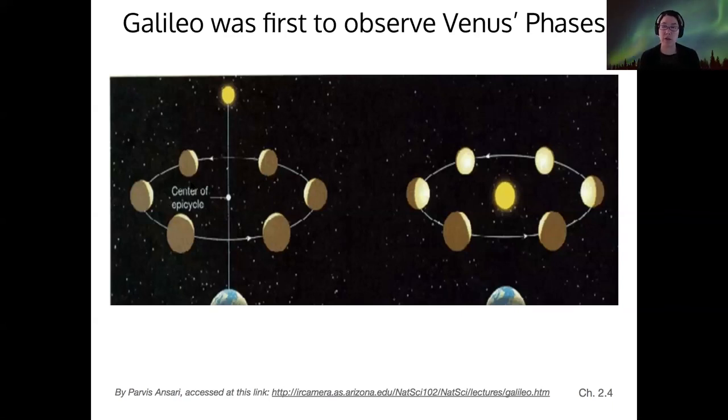Galileo was the first to observe these phases because Venus is so small in the sky that you had to have a telescope in order to make this observation.